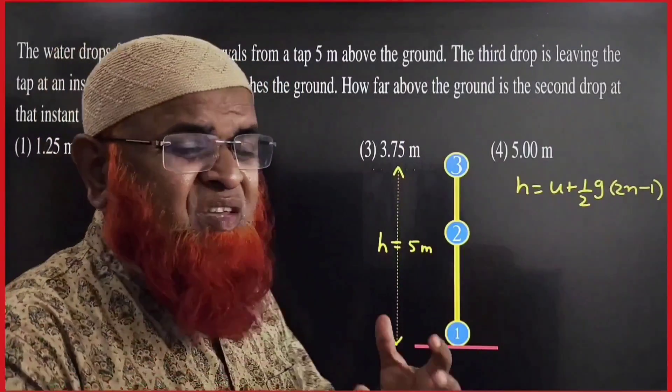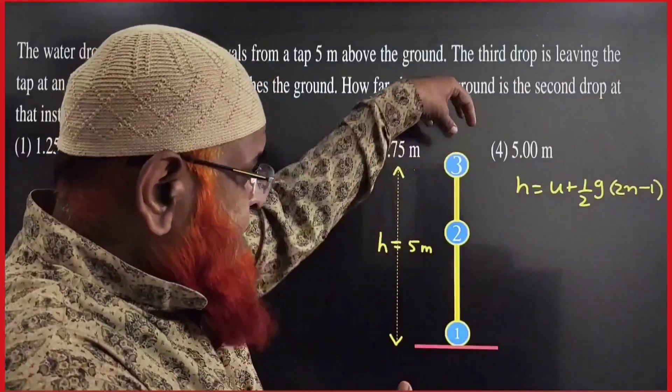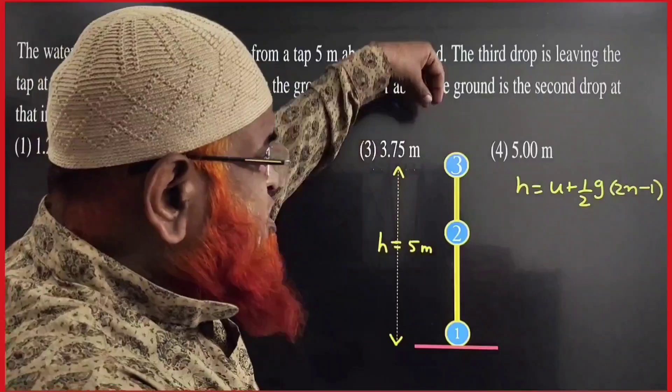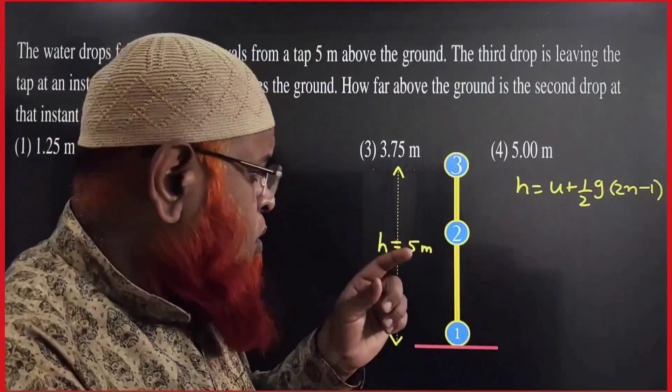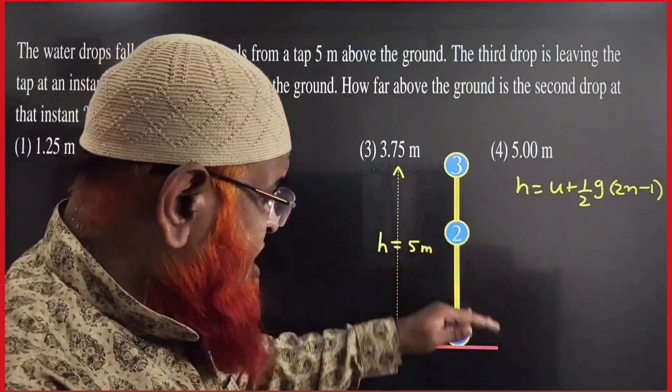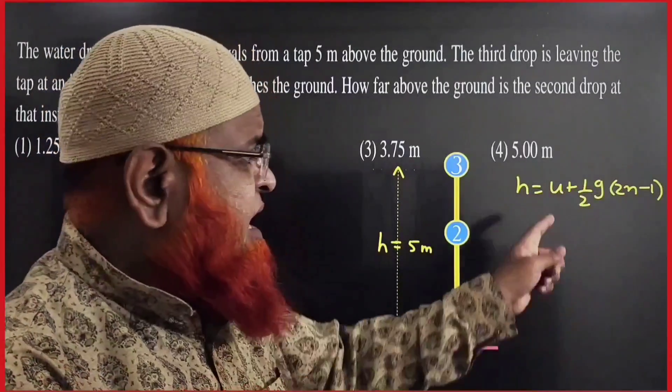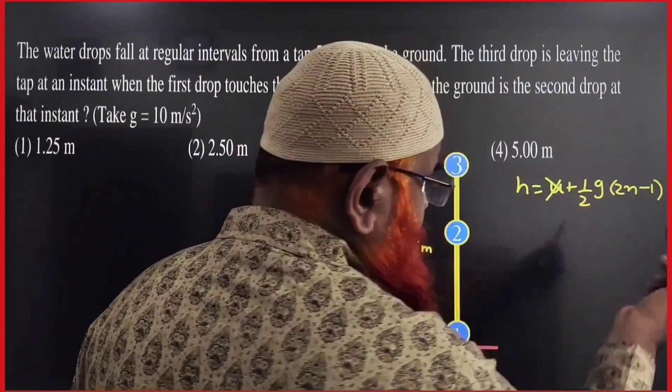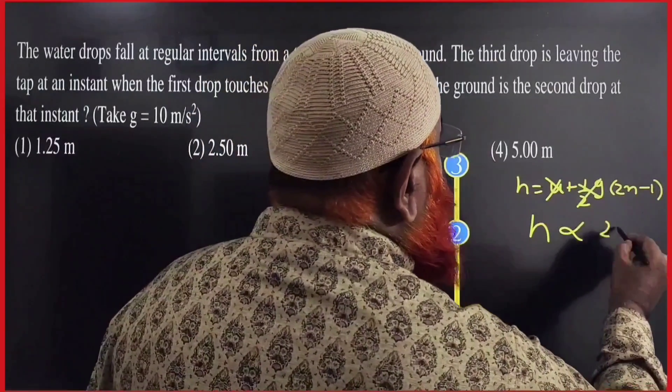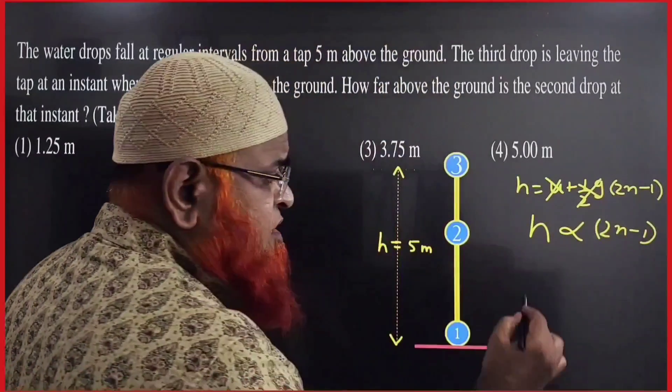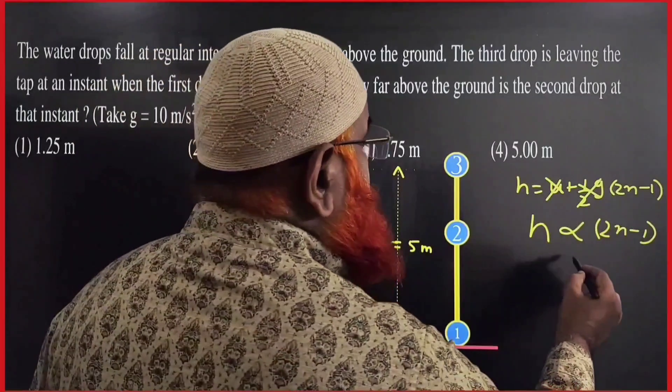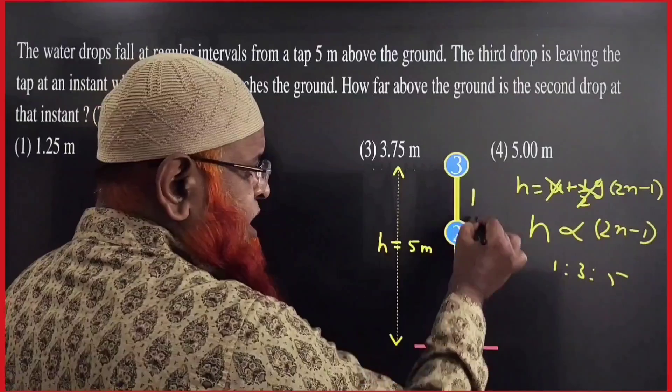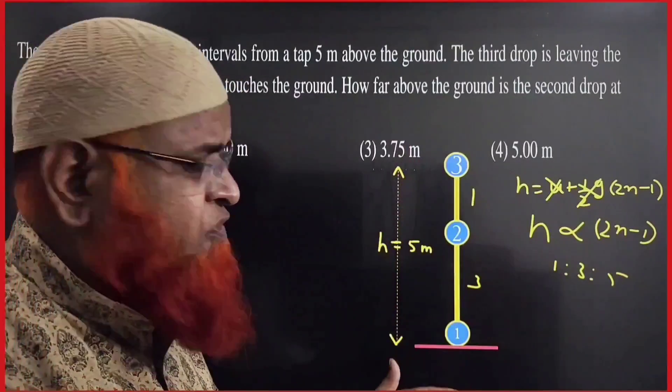Mind your friends. Here, this is the water drops coming downwards from the tap. So, when the first drop is touching the ground, third drop is leaving from the tap. Then, what is the distance of the second drop from the ground? From this formula, h is equal to u plus half g into 2n minus 1. Initial velocity is going to be 0. From this, h is directly proportional to 2n minus 1. So, n equal to 1, n equal to 2, you are getting ratio 1 is to 3 is to 5. The distances are in the ratio 1 is to 3 is to 5 and so on.